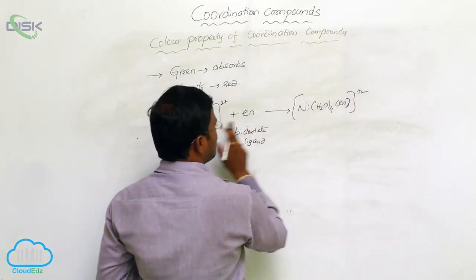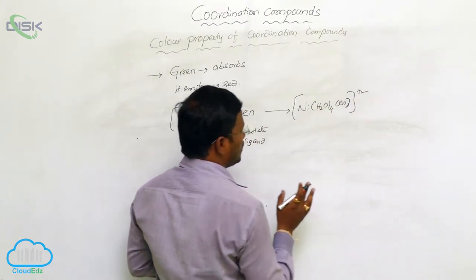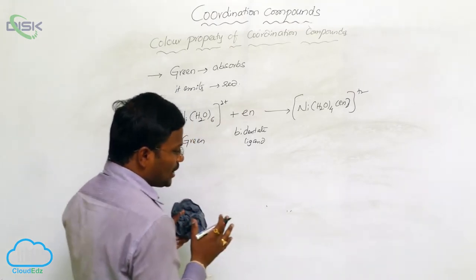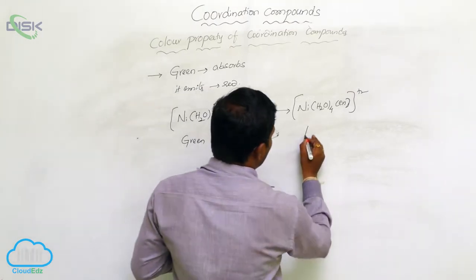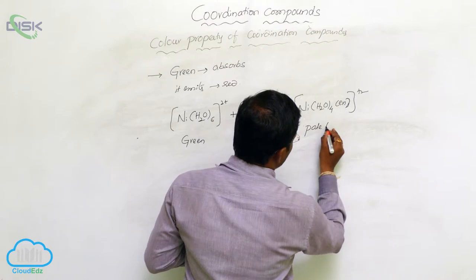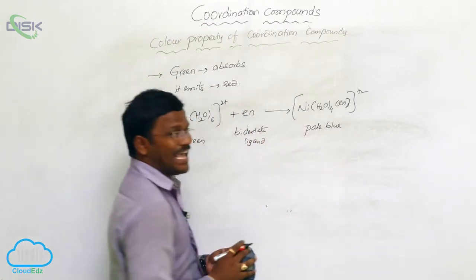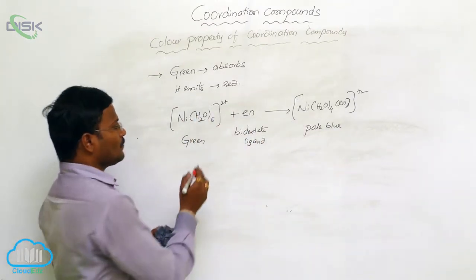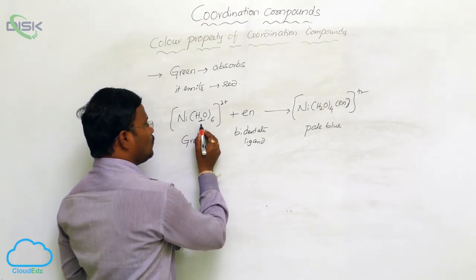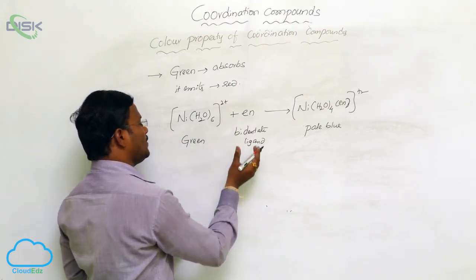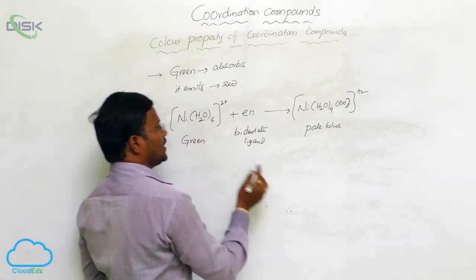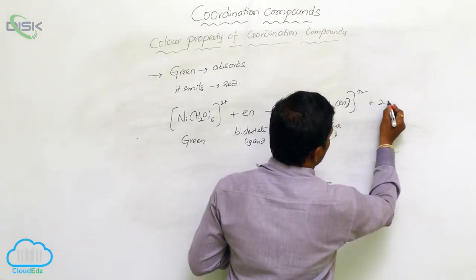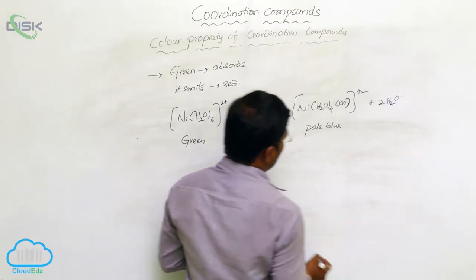When it interacts with ethylenediamine, it produces Ni(H2O)4(en)2+. Water molecules and ethylenediamine are neutral ligands and the resulting compound will show pale blue color. Instead of two water molecules, one ethylenediamine bidentate ligand substitutes in place of water molecule plus two water molecules.